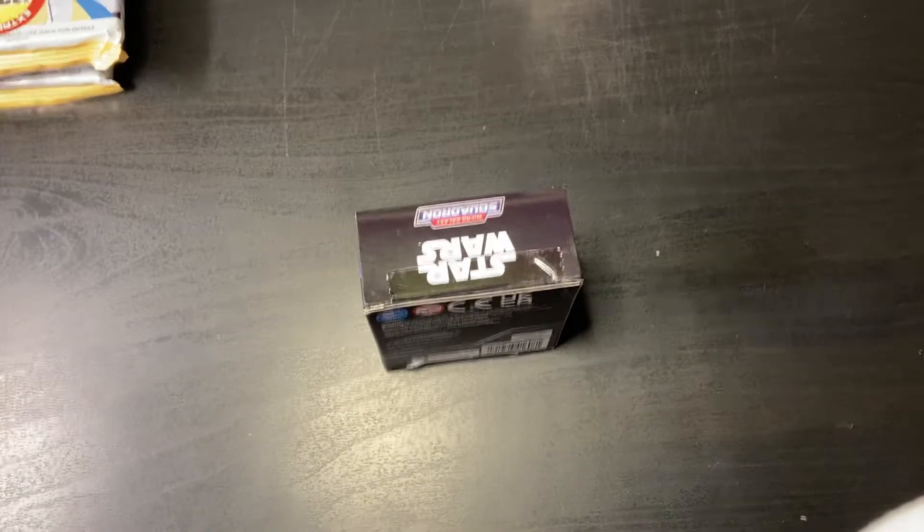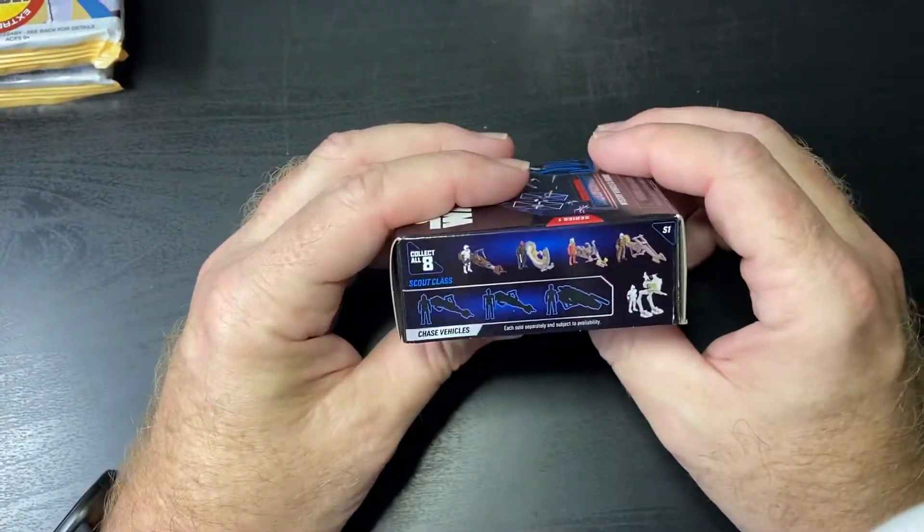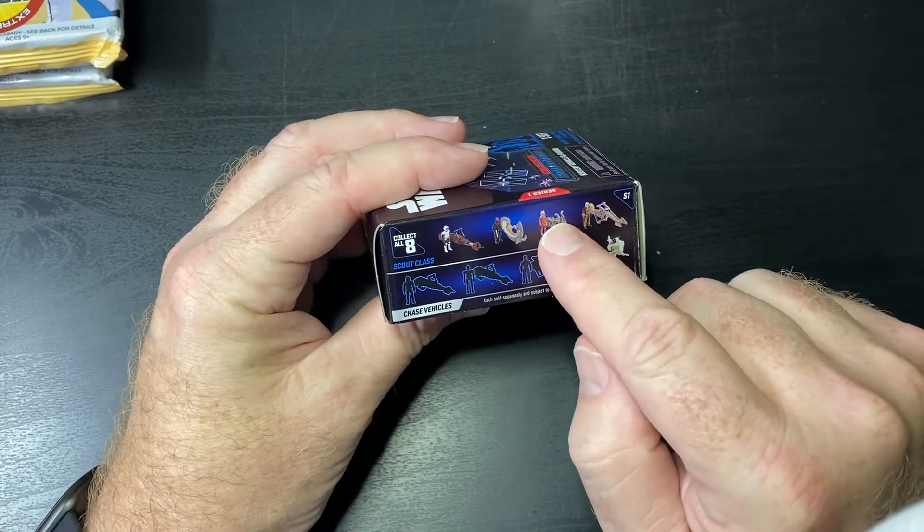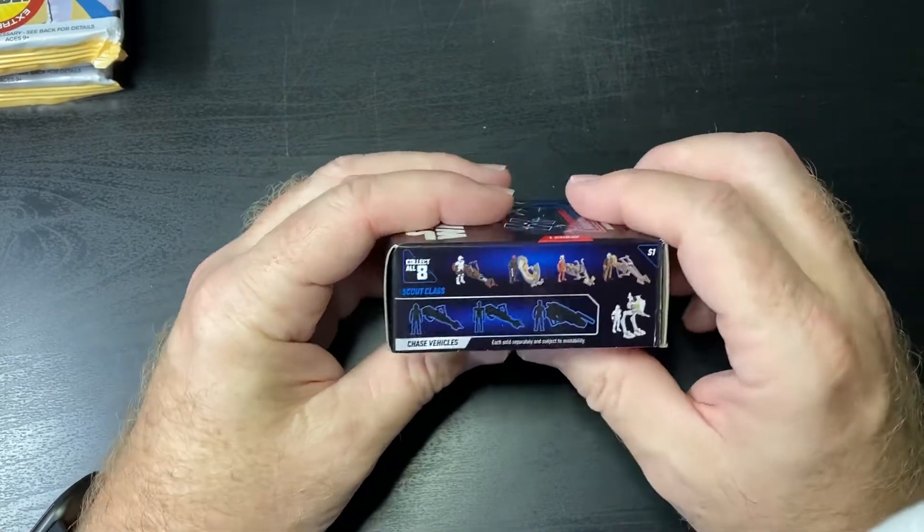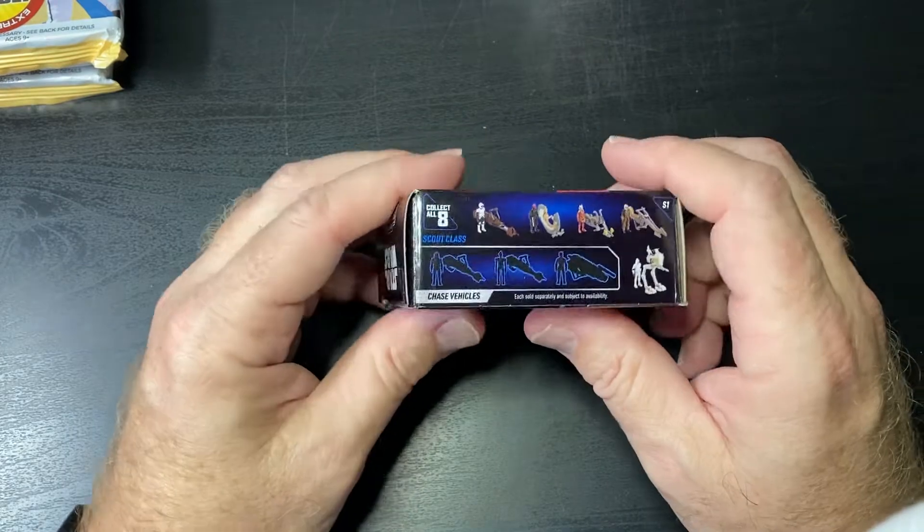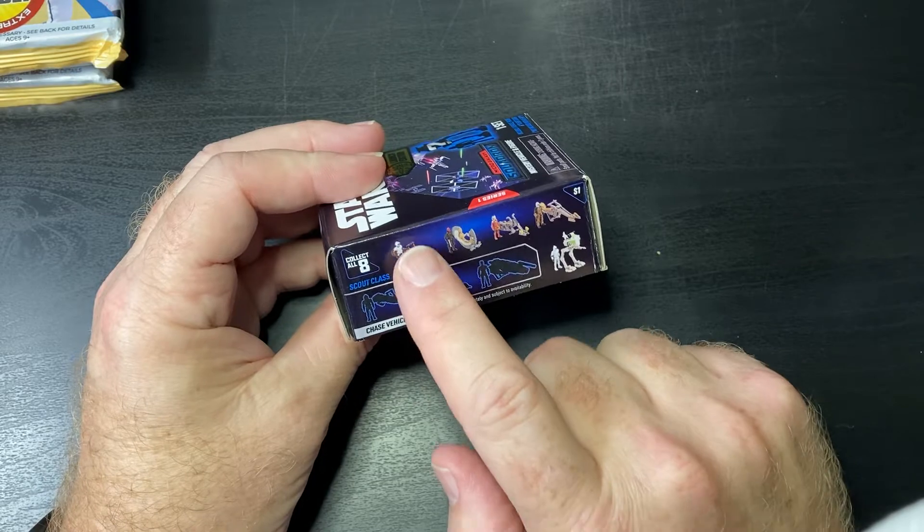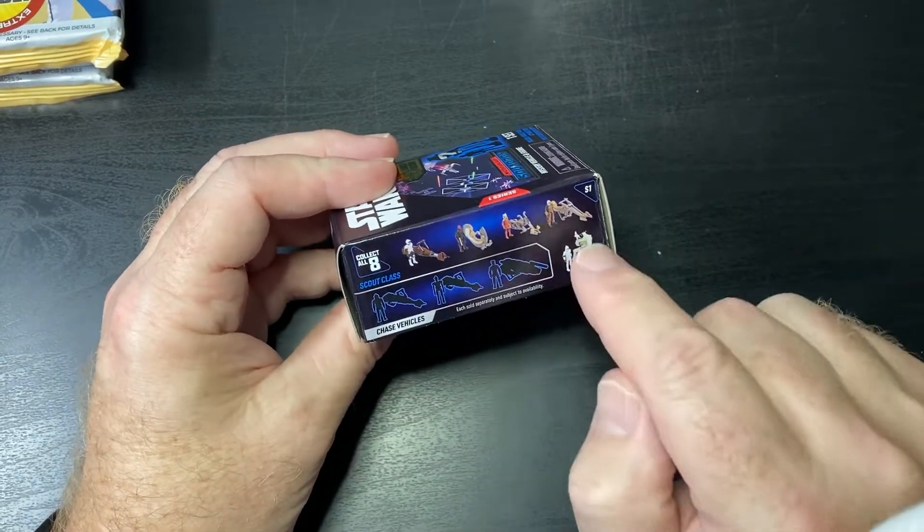So far, of the five commons, I've found three of them. I've opened four boxes and have one repeater. Hopefully we'll get either one of the chase vehicles or one of those two that I do not have yet.